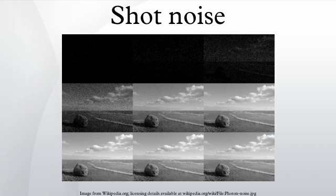Shot noise in electronic circuits consists of random fluctuations of the electric current in a DC current, which originate due to the fact that current actually consists of a flow of discrete charges. Because the electron has such a tiny charge, shot noise is of relative insignificance in many cases of electrical conduction. For instance, one ampere of current consists of about 6.24 × 10^18 electrons per second. Even though this number will randomly vary by several billion in any given second, such a fluctuation is minuscule compared to the current itself.